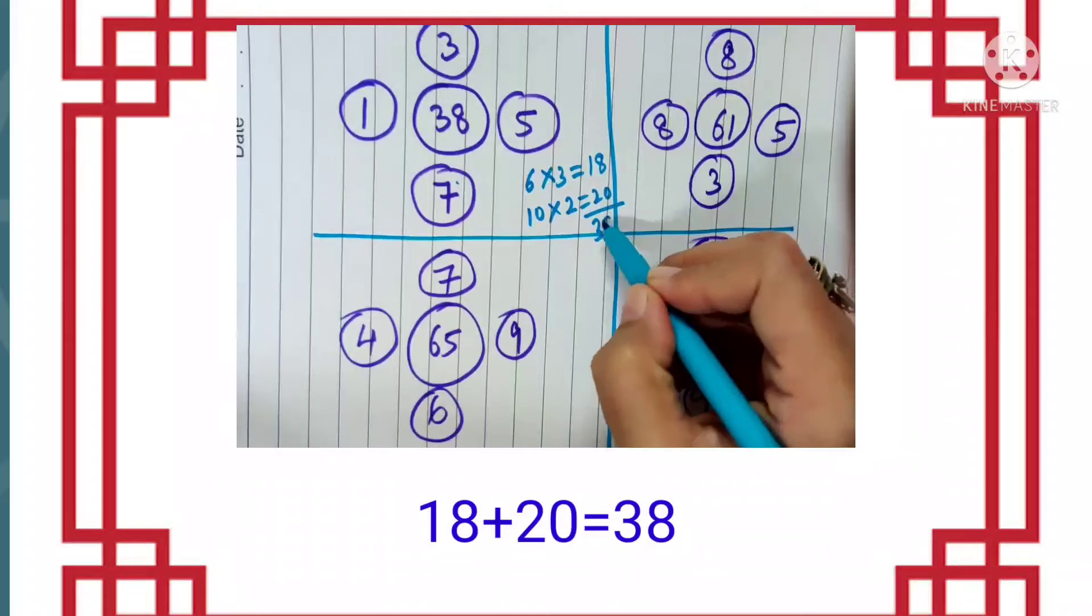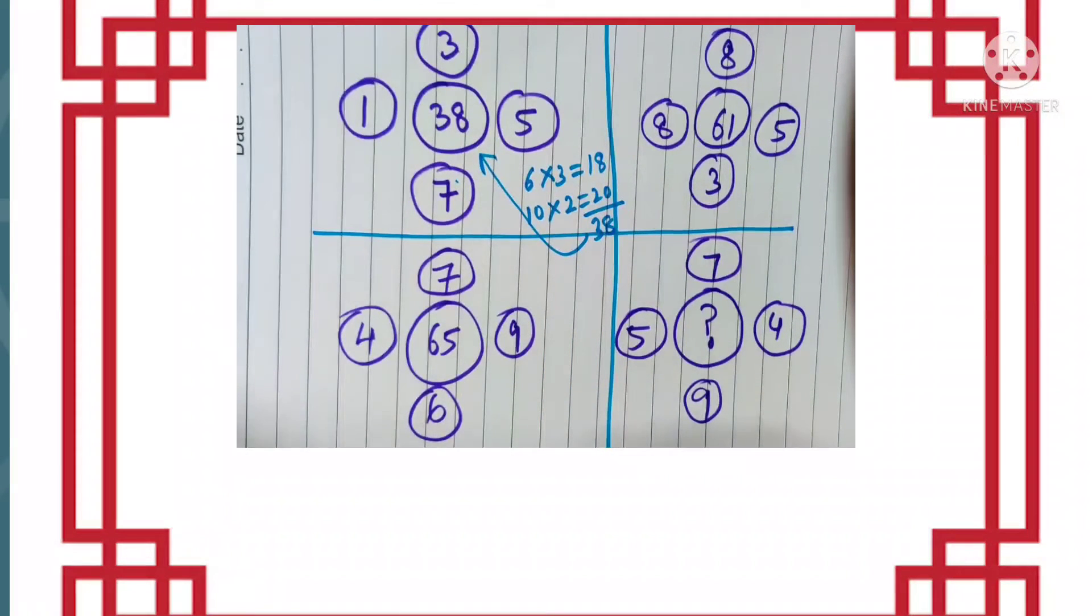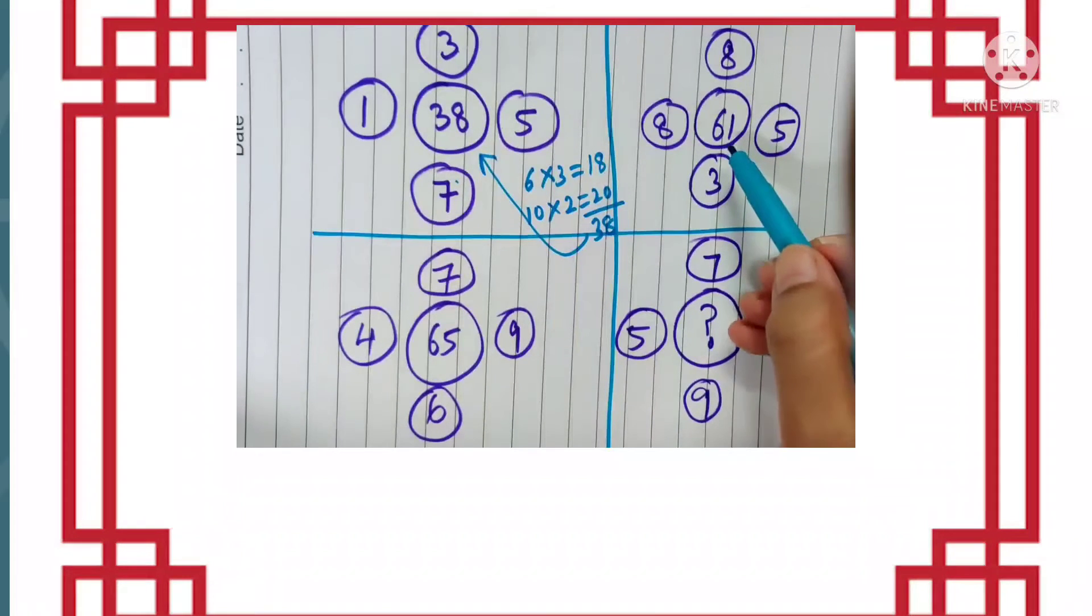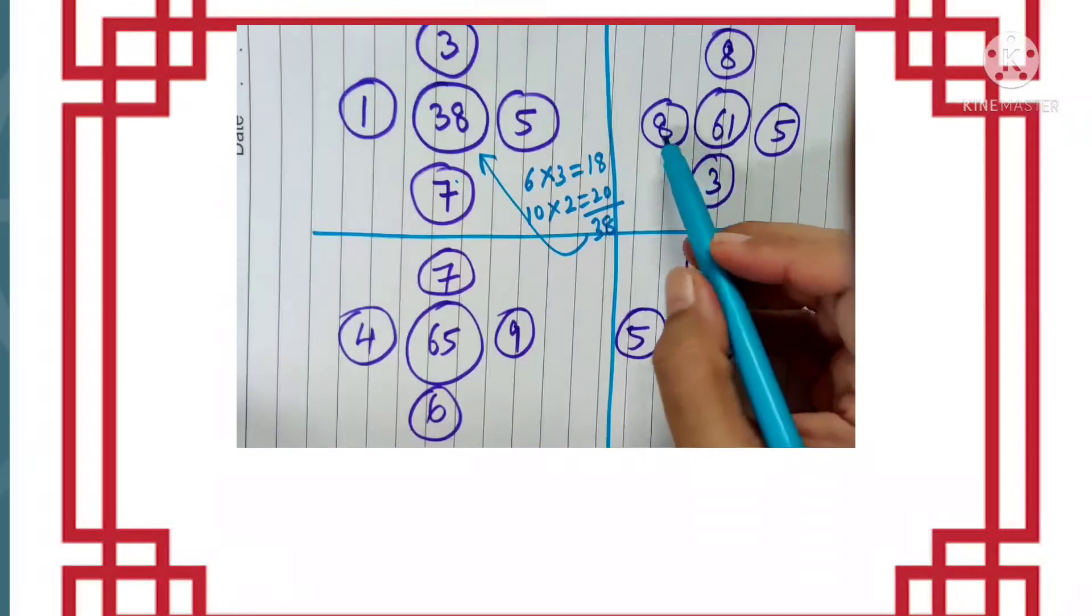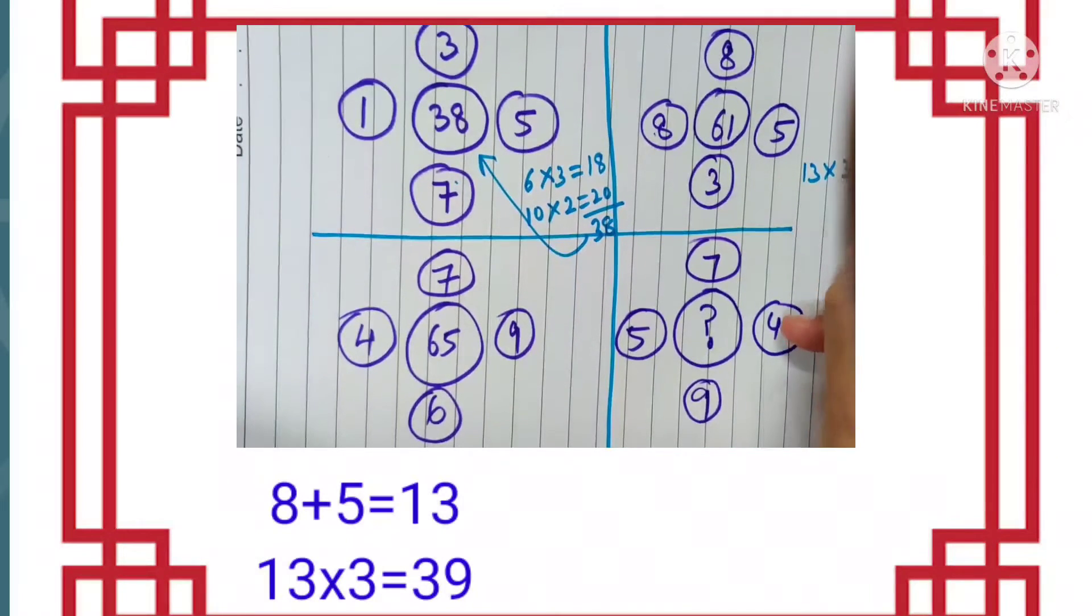Multiply this by 2, this gives us 20. And when we add these two we get the answer as 38, which is the central number. Let us see if this pattern works. So here the central number is 61. We are following the same pattern: add 8 and 5, that is 13, multiply by 3.